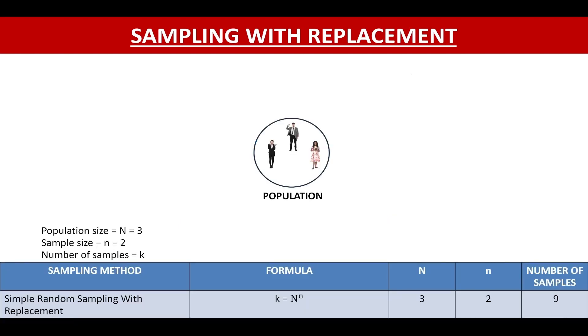The number of samples that we can get in case of sampling with replacement are given by population size raised to the sample size. So in this case, we will get a total of 9 samples.